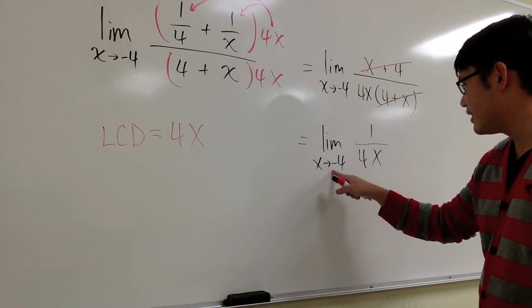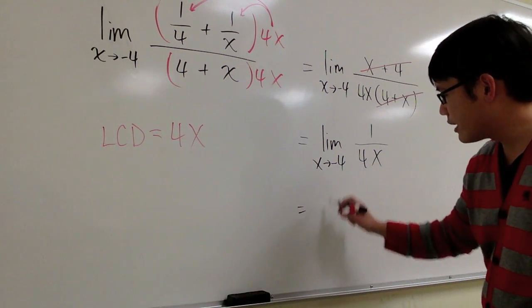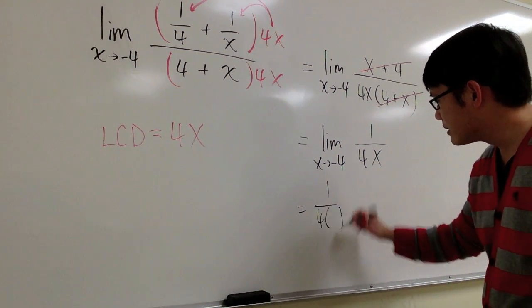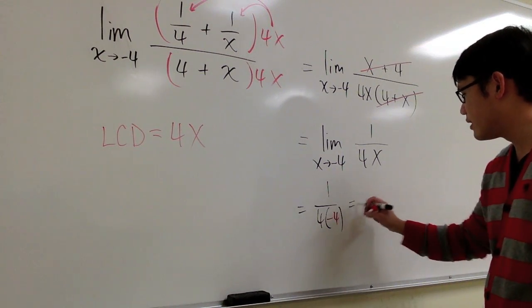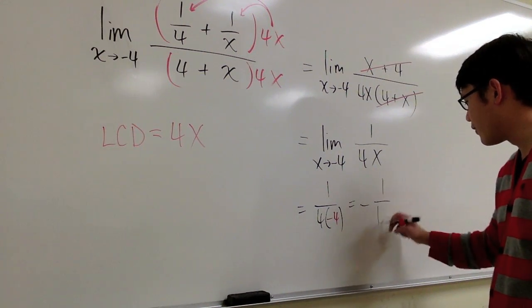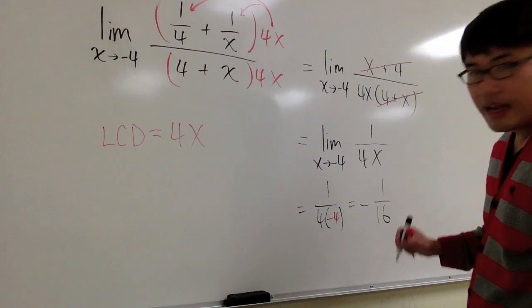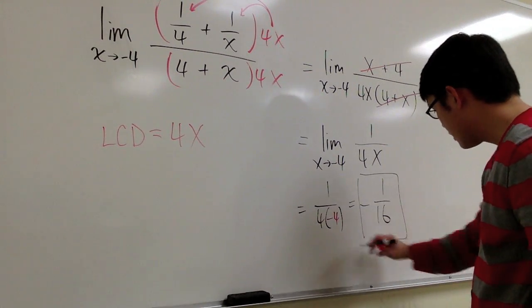Now I just need to plug in negative 4 into this x. And I will get 1 over 4 times negative 4. Altogether, I will get negative 1 over 16, and that will be the answer.